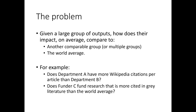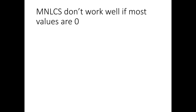For example, does department A have more Wikipedia citations per article than department B? Or does funder C assert that it is more cited in the grey literature than the world average? Exactly the same problem as the previous presentation.